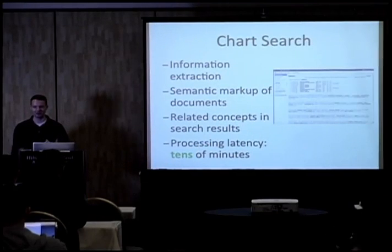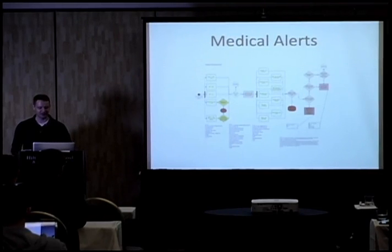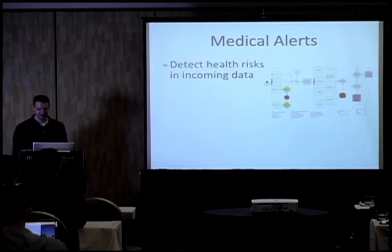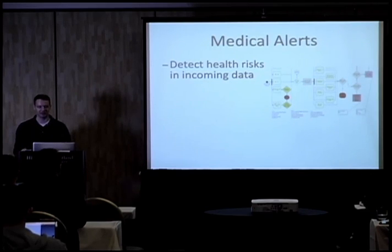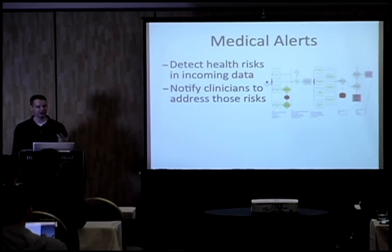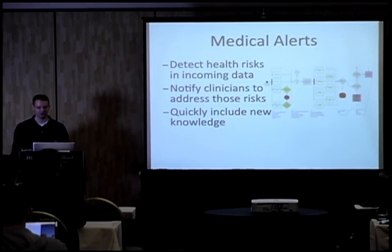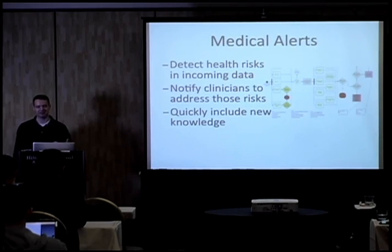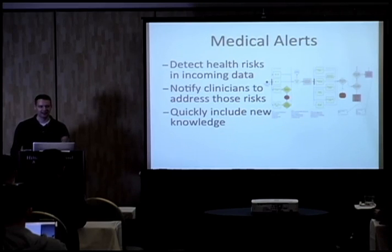We decided, well, we've got all this data together — wouldn't it be great if we can do some more with it? So we started looking at doing medical alerts on data we're bringing together in the cloud. Given incoming data, we want to detect patients that have certain health risks based on literature or research to indicate they may have issues, notify clinicians about those risks, and quickly include new knowledge to improve that. An example we've actually rolled out is detecting patients at high risk of sepsis — based on vital signs, lab results, and other measures.